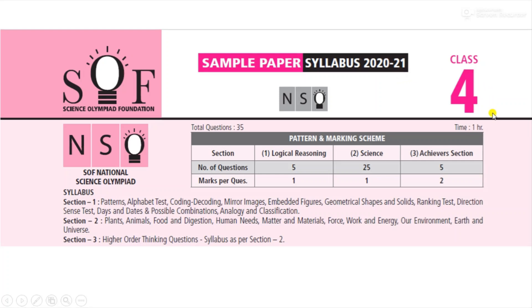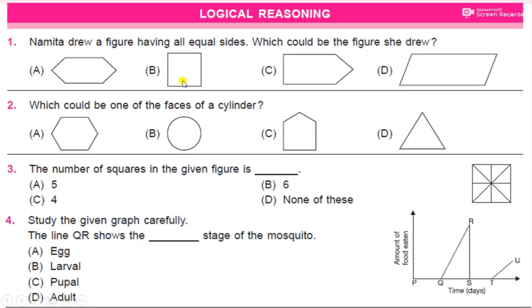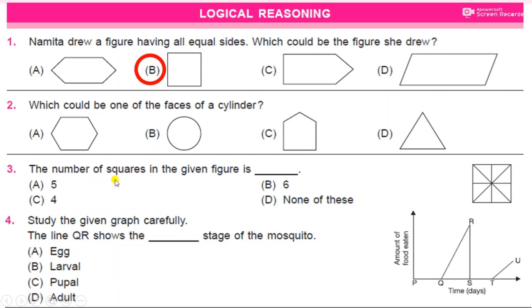Look at the first question. Namita drew a figure having all equal sides. Which could be the figure she drew? You need to identify the figure which has equal sides. Look at the options given, and the answer is B, square, because it has all equal sides.